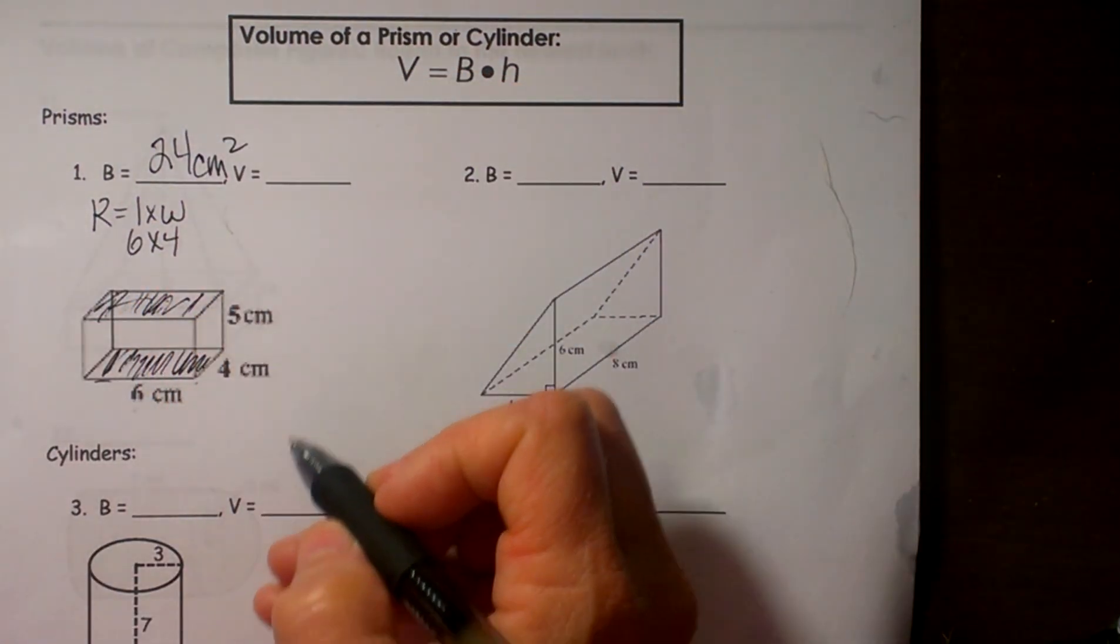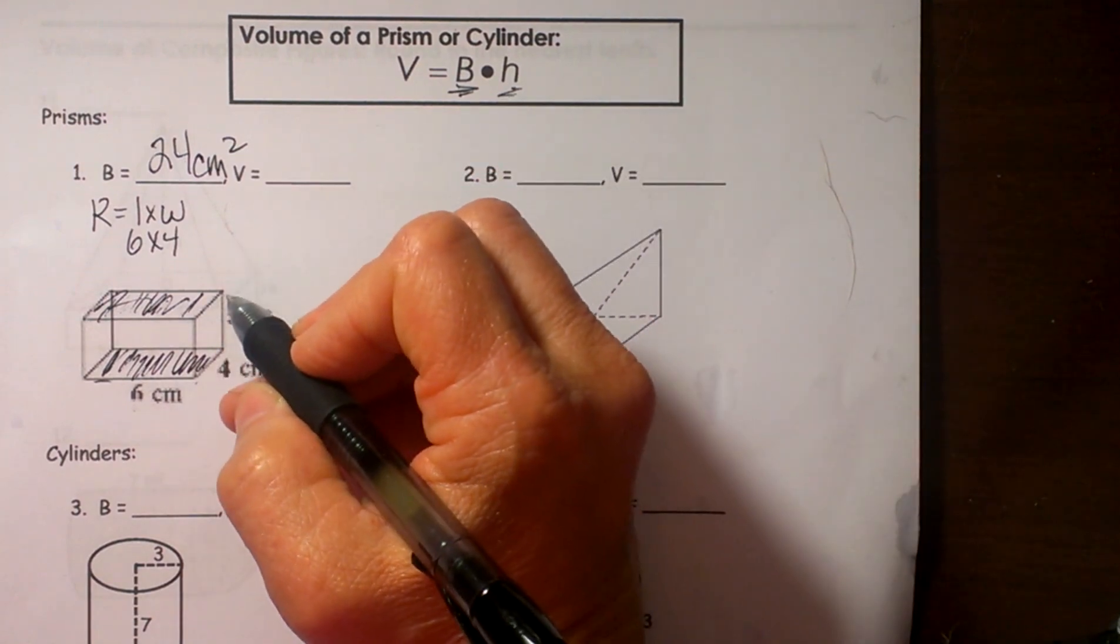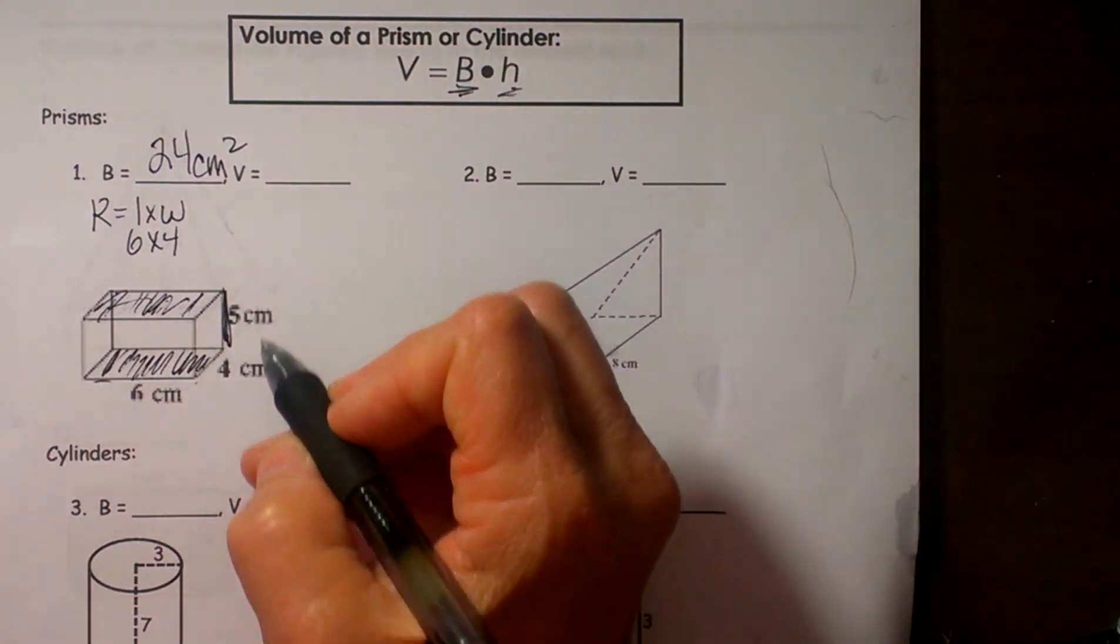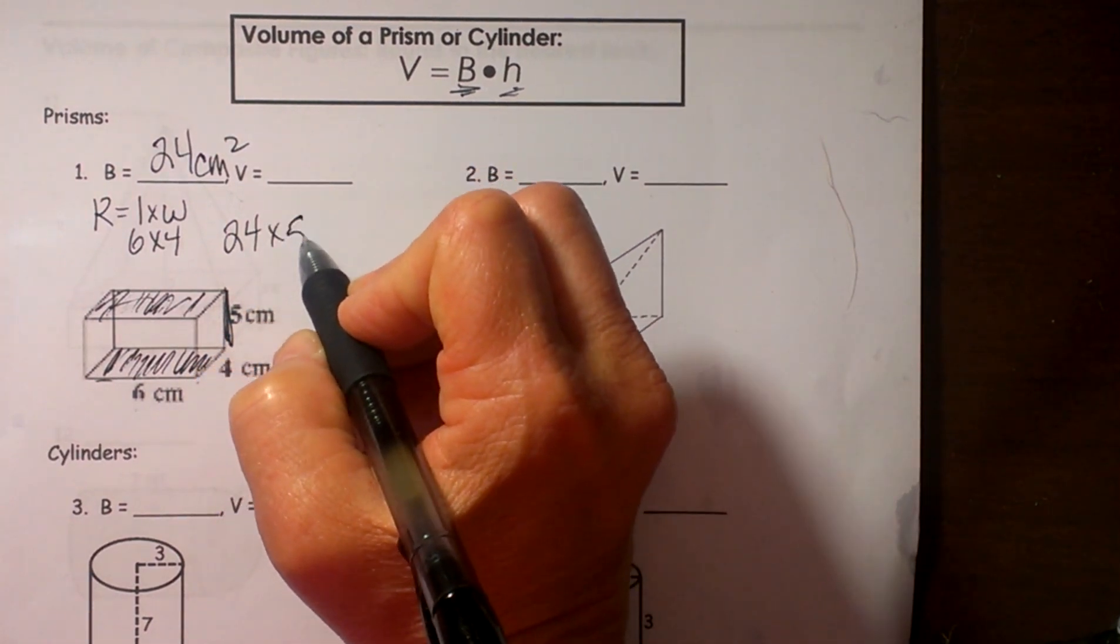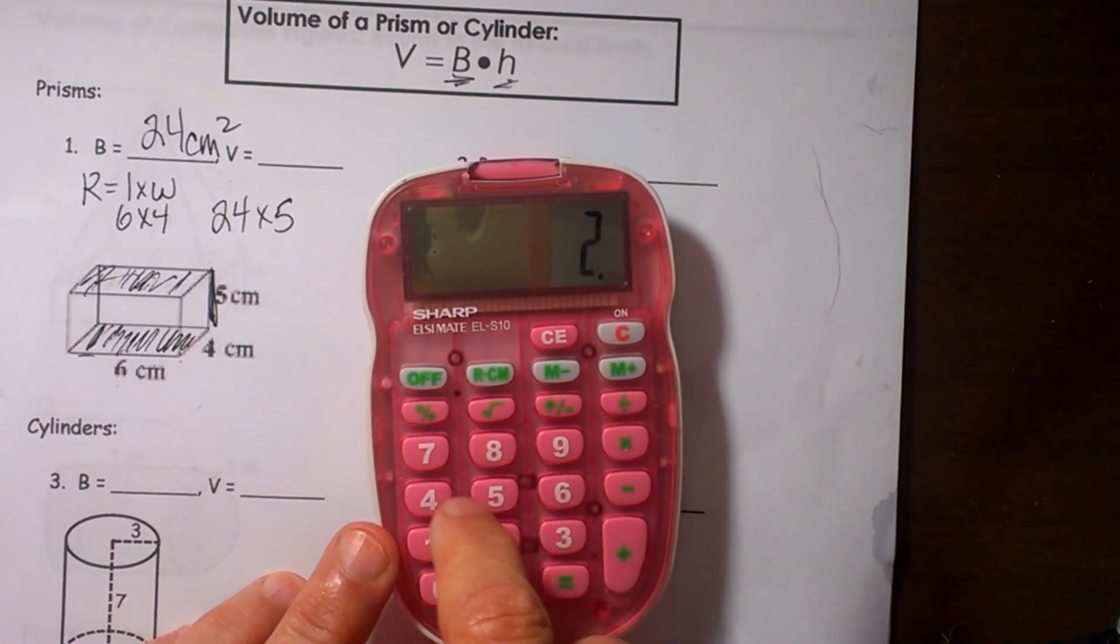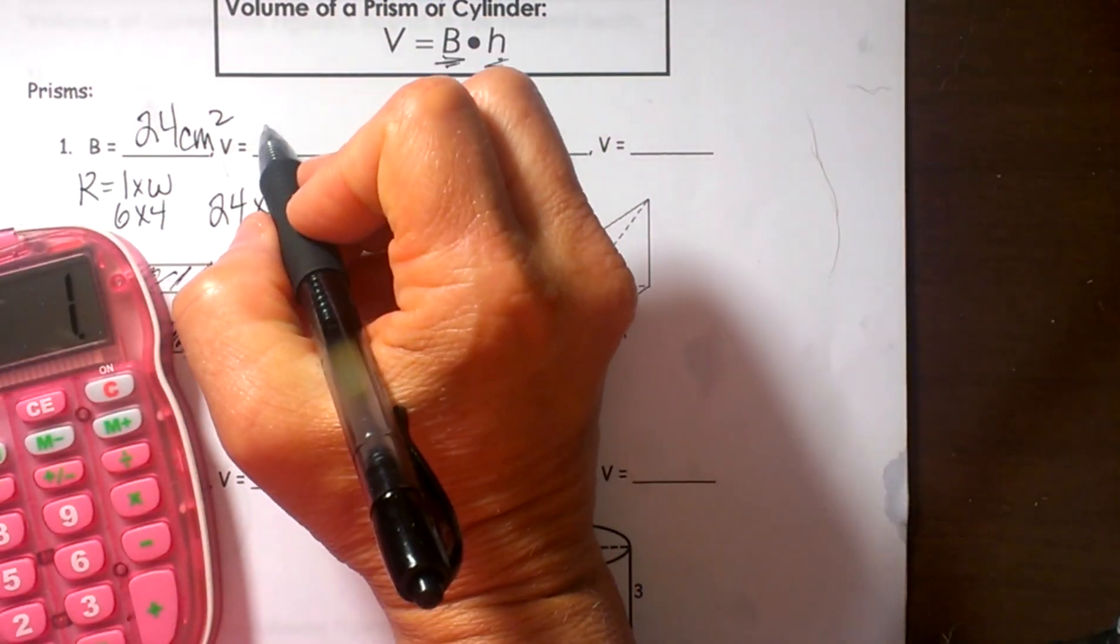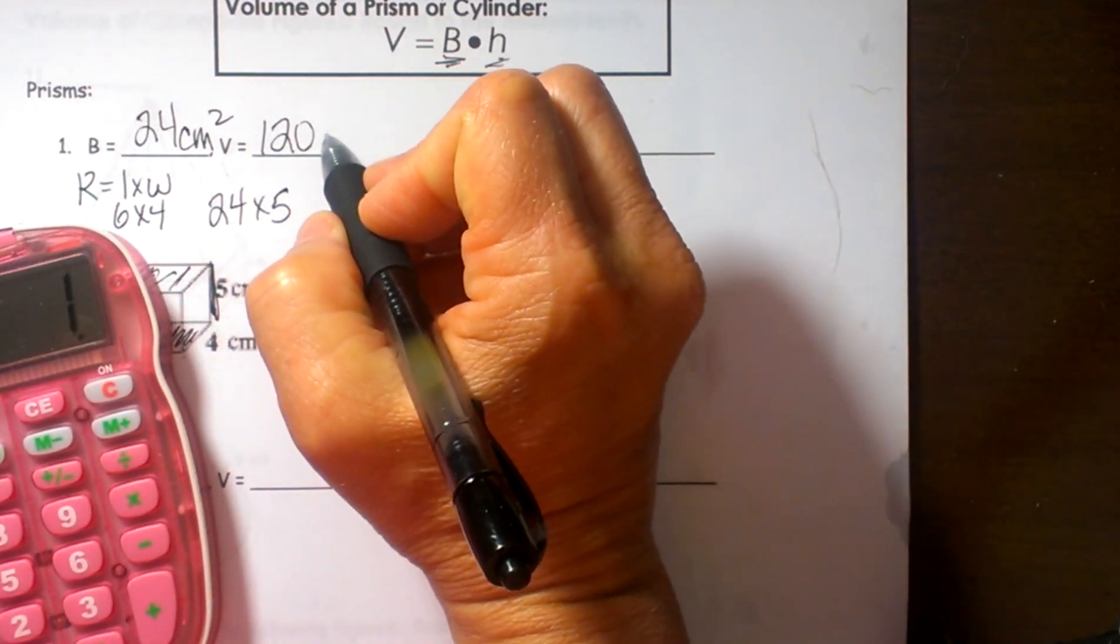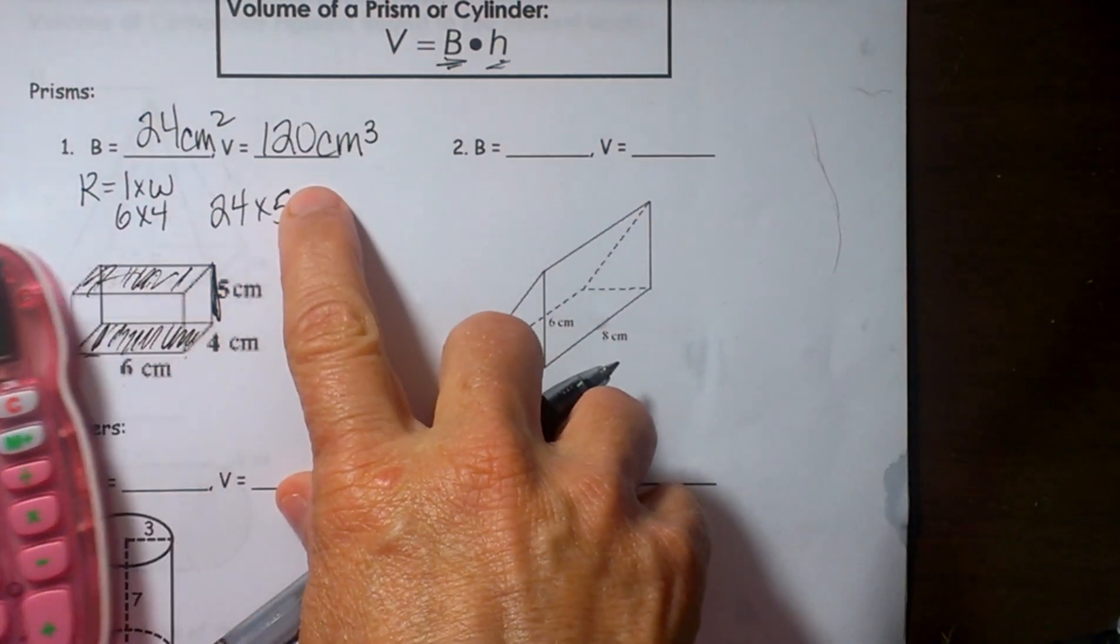Now to find the volume I am going to take that base area times the height. Well the height of the pyramid is 5 in this case. So let's just take 24 times 5 and grab our calculators and we get 120. Now for volume our units are always cubic. So there is the volume in cubes.